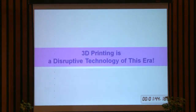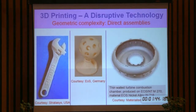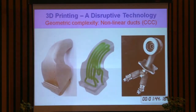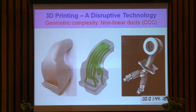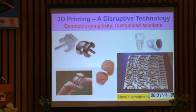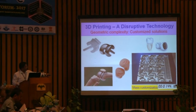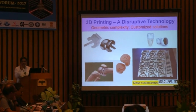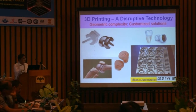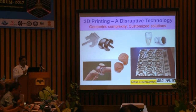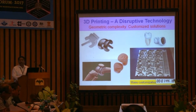The second claim is to show that it is a disruptive technology. Today it is possible to make assemblies directly — only nature was doing it till now. It is possible to make ducts which are non-linear in axis, non-linear in cross-section; the hole inside can change in diameter. It is possible to make customized solutions. You can see on this plate some 400 components — all look similar, they are tooth crowns, but each tooth is for a different patient. So it is a very new way of looking at mass customization.